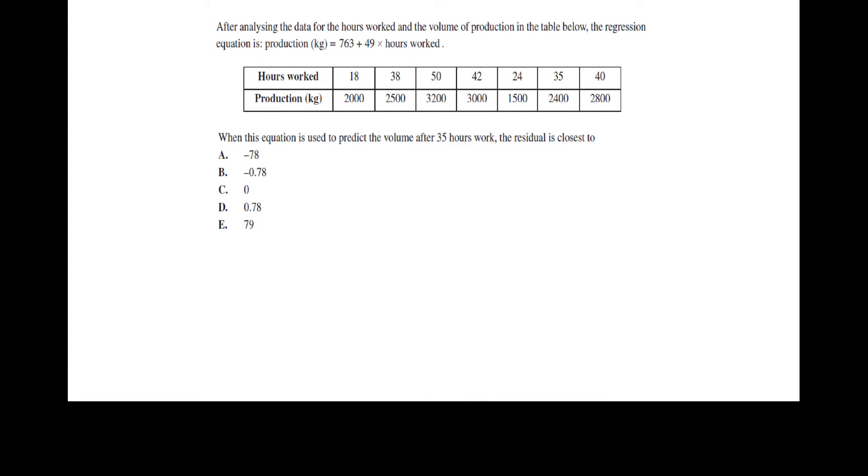Another common type of question in multiple choice for bivariate data is this where we're asking for a residual value so the question reads after analyzing the data for hours worked and the volume of production in the table below the regression equation is production equals 763 plus 49 times hours worked when this equation is used to predict the volume after 35 hours worked the residual is closest to. Okay so we need to remember that our residual value is our actual value minus our predicted and we will always begin with enough information to work out what is the actual and what is the predicted.